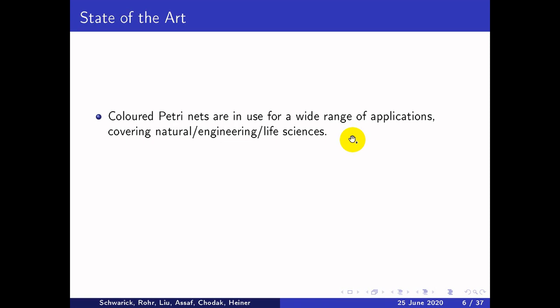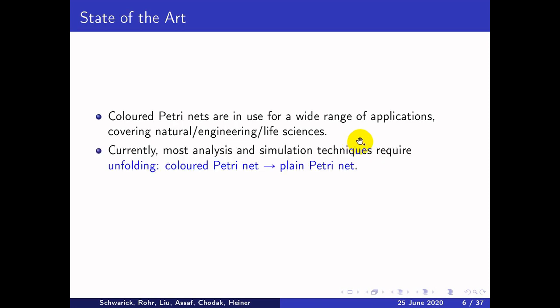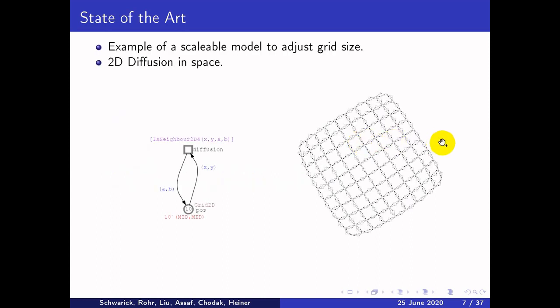Colored Petri nets are used for a wide range of applications covering natural engineering and life sciences. Currently, most analysis and simulation techniques require unfolding colored Petri net models into plain Petri net models, so the unfolding step tends to be time-consuming. For example, when we have a scalable model like 2D diffusion in space, scaled by grid size — when we set the grid size to 10 and unfold the colored Petri net model, we obtain an unfolded Petri net in the form of a grid.